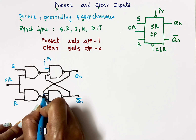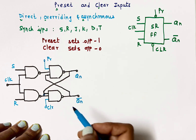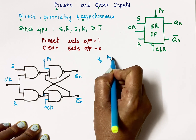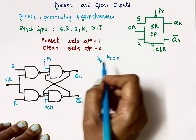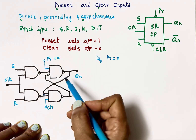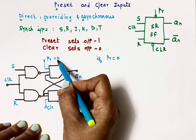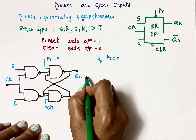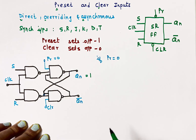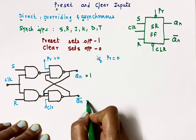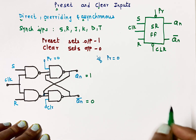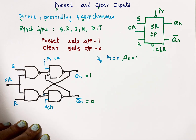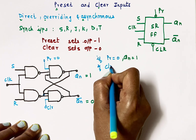If preset equals 0, in a NAND gate, if any one input is 0, the output of the NAND gate becomes 1. So Qn will become 1 when preset is 0. Therefore, when preset is 0, Qn is 1, and Qn-bar will automatically be 0.